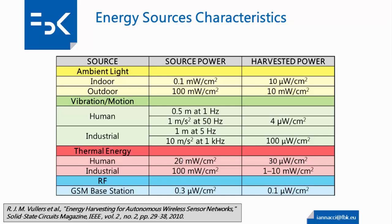If we look at vibrations, dividing them into human-generated and industrial, we see that the density of power is quite low but comparable with other sources. Concerning light, the density is very high in outdoor scenarios but drops quite significantly in indoor environments. Similarly, thermal generation is quite efficient in industrial environments but drops significantly for human thermal gradients. So vibrations are quite widespread in the environment and can be used quite efficiently to generate power.